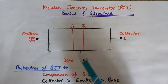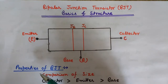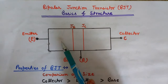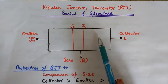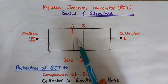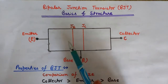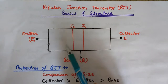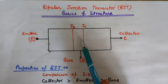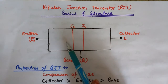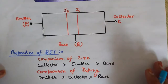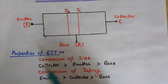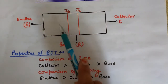For transistor action, it is desirable that a large amount of carriers — electrons or holes — are emitted from the emitter and reach the collector region, with some recombination also taking place in the base region. The doping and the size of the emitter, base, and collector regions are fabricated in such a way that they help the maximum number of charge carriers reach from the emitter through the base into the collector region.